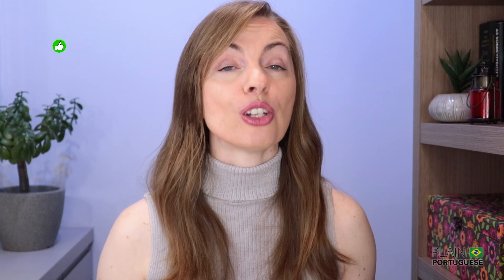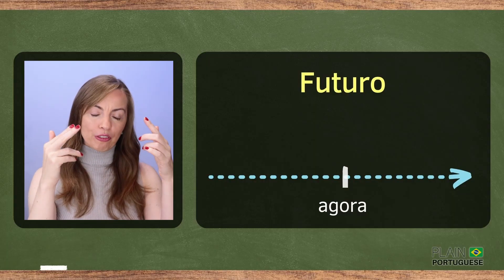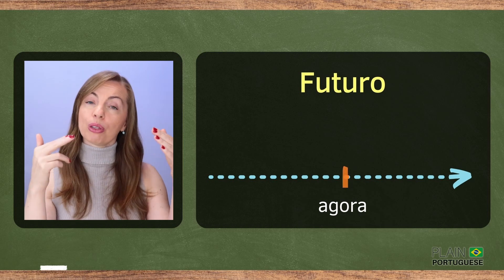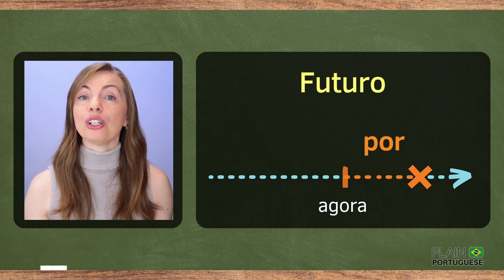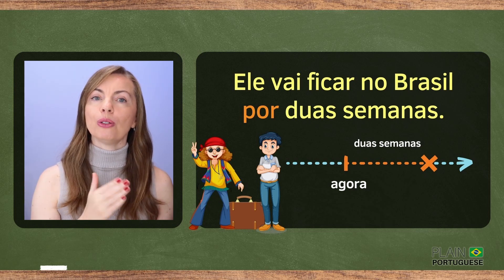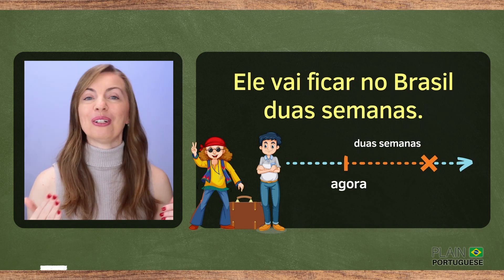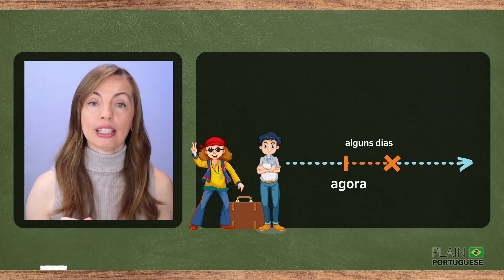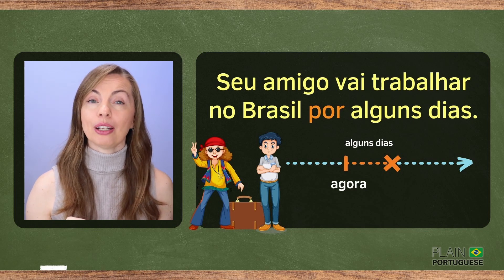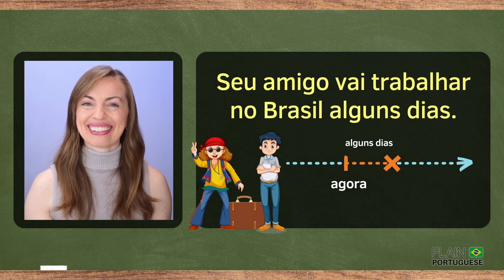So far we have talked about the past and the present. Now it's time to talk about the future. If you want to say for how long you will do something, the preposition por is a good option — as in 'He'll stay in Brazil for two weeks.' It's also possible to omit it: Ele vai ficar no Brasil duas semanas. His friend will work in Brazil for a few days: Seu amigo vai trabalhar no Brasil por alguns dias, or simply alguns dias.